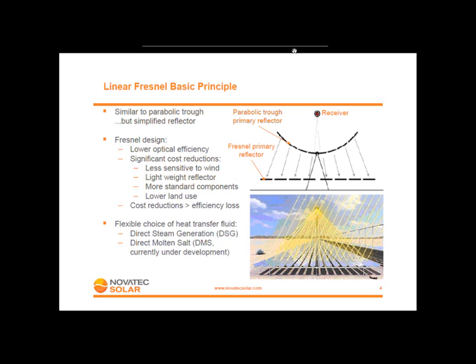That's a big difference between trough and Fresnel. With the Fresnel design, you lose a bit in optical efficiency because you don't have as accurate an optical configuration as for parabolic trough. But on the other side, since you are reducing weight and using much simpler components, you also achieve quite significant cost reduction. The entire idea of the Fresnel business model is that the cost reduction should be larger than what is lost due to the lower optical efficiency.